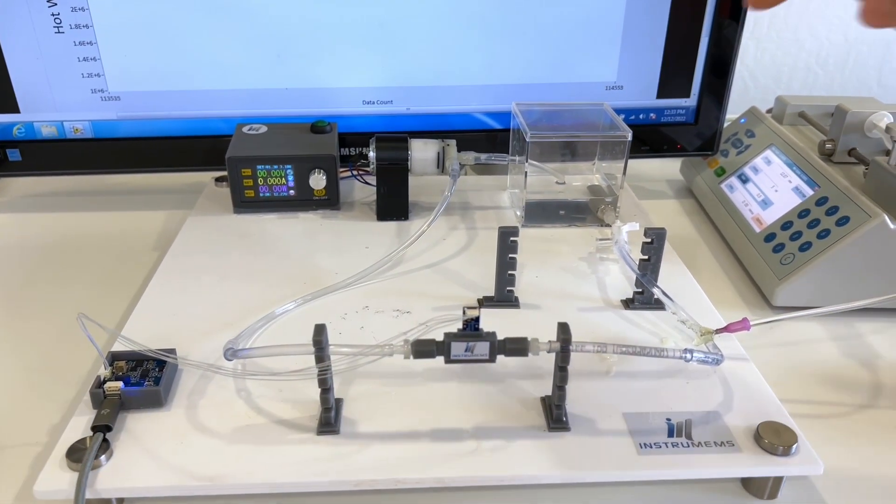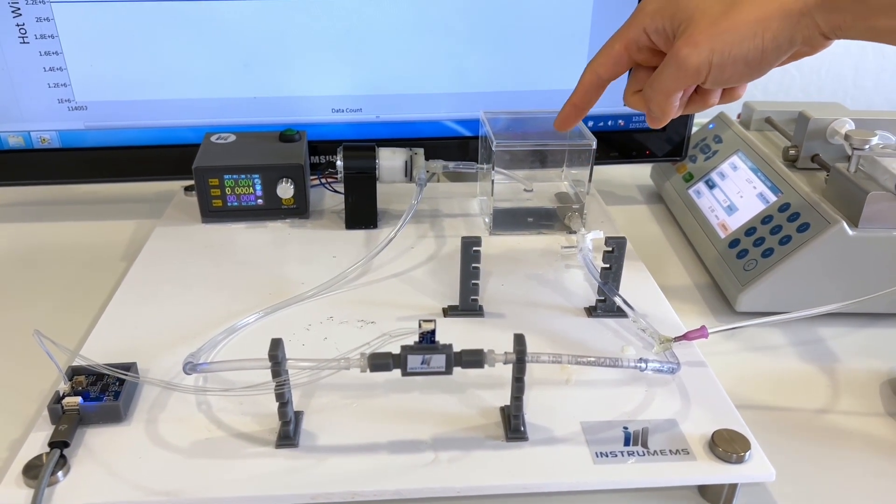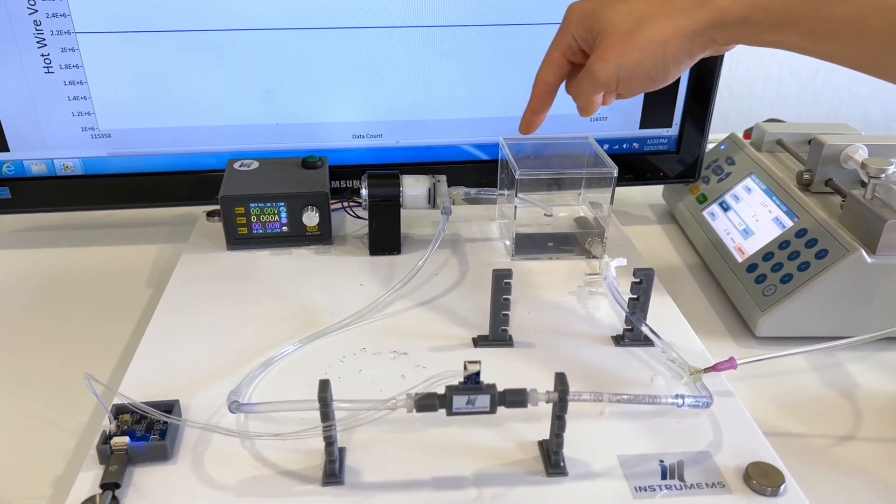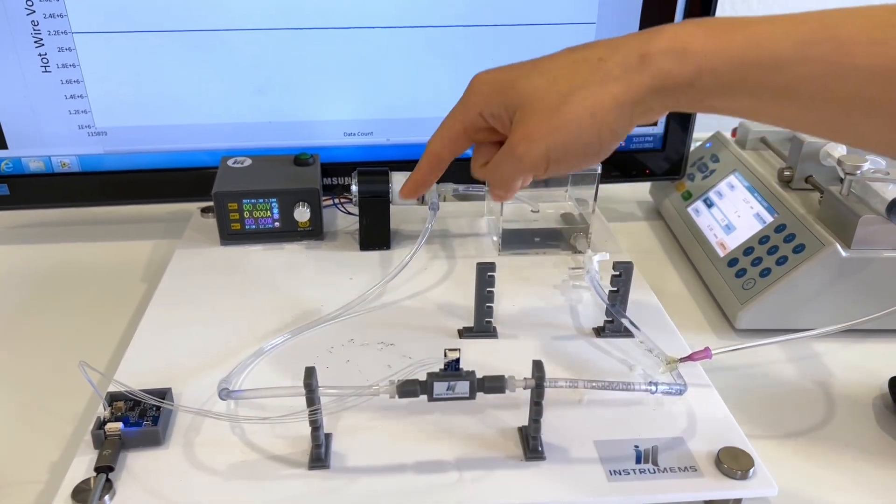To generate a smooth flow profile and reduce any noise from the pump, the liquid is housed in this reservoir. A water pump is used to generate the flow for the sensor under test.